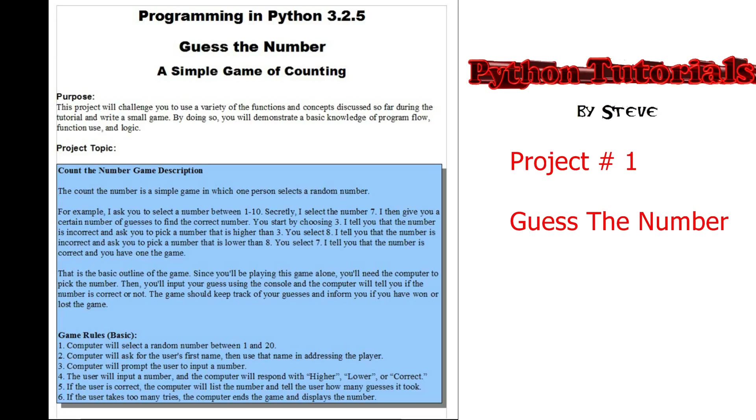If you don't really know where to start, I suggest the basic rules that I have listed at the bottom of the screen here. Have the computer select a random number between 1 and 20. Have the computer ask for the user's first name and throughout the program when you address the player, try and use their name. Just store it in a name variable and when you refer to them, instead of printing player, print their actual name.